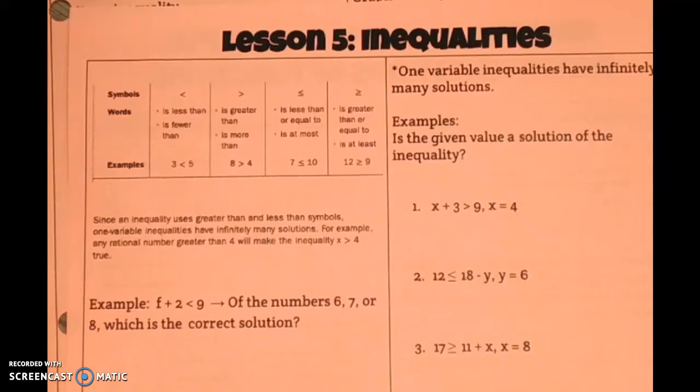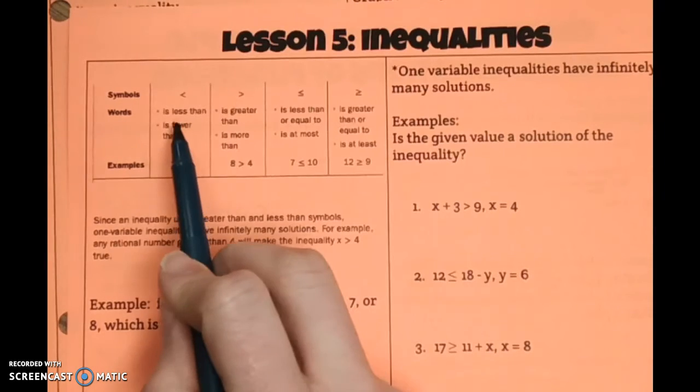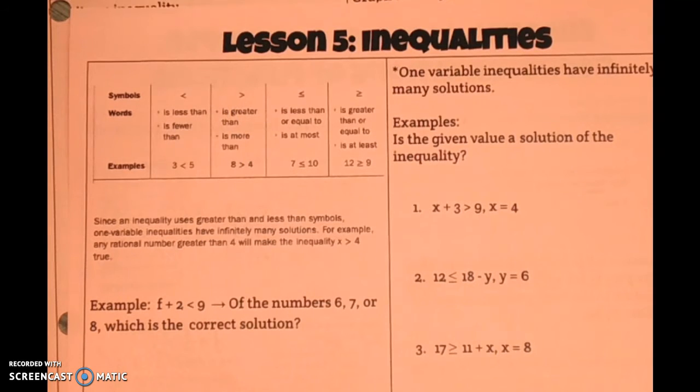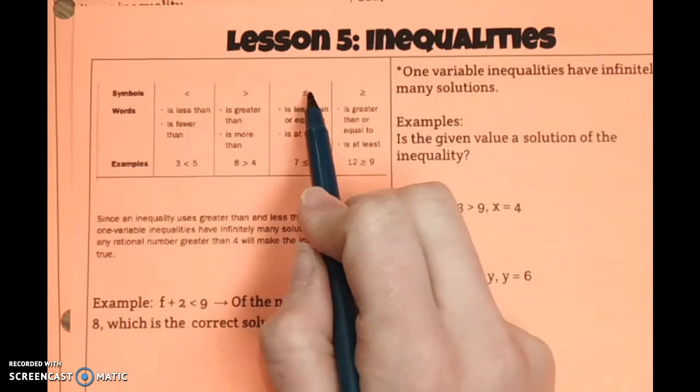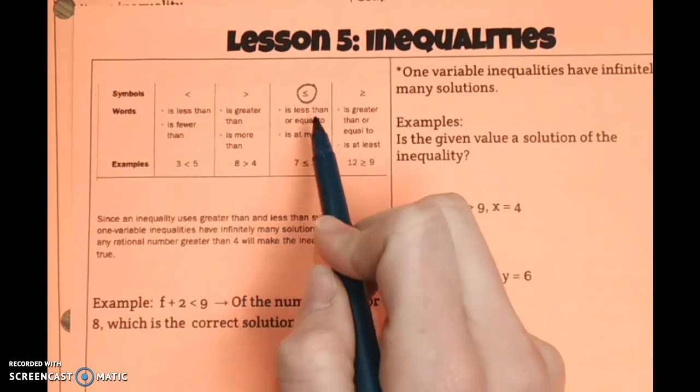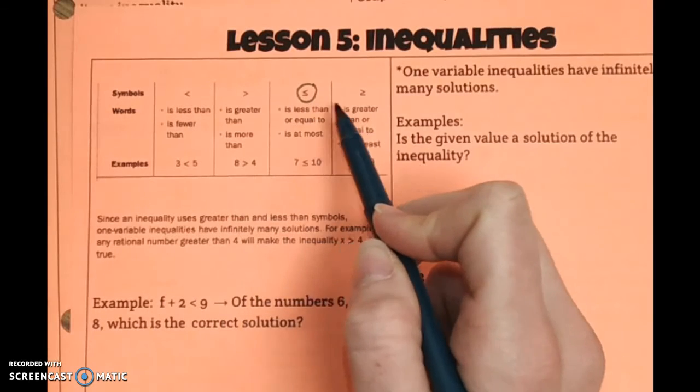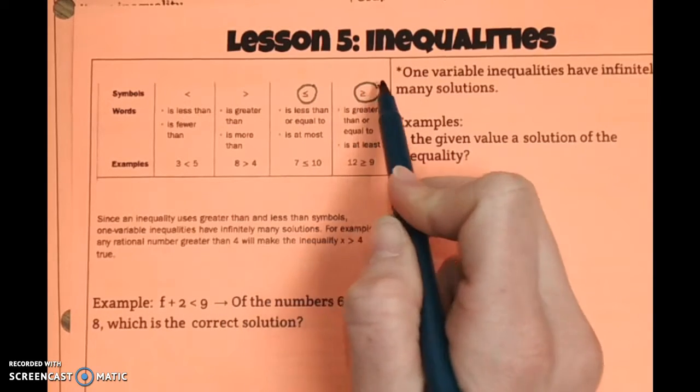Okay, let's take a look at inequalities. When we're dealing with inequalities, we're going to be dealing with less than, greater than, and now we're going to throw two new things in there. This right here is a less than or equal to sign because it's half an equal sign at the bottom, and this one is a greater than or equal to sign.